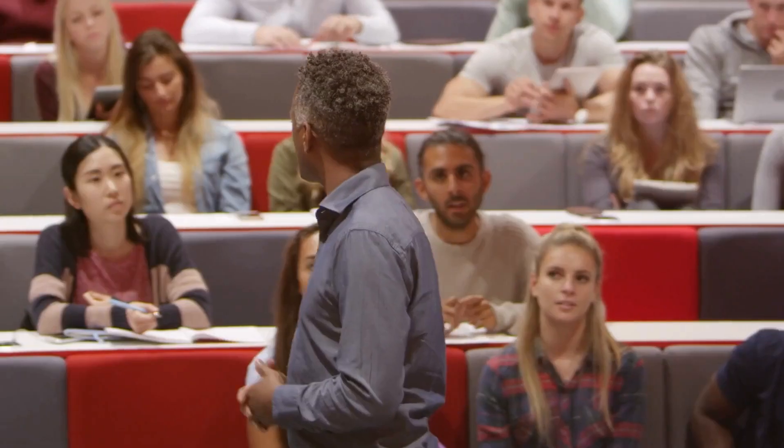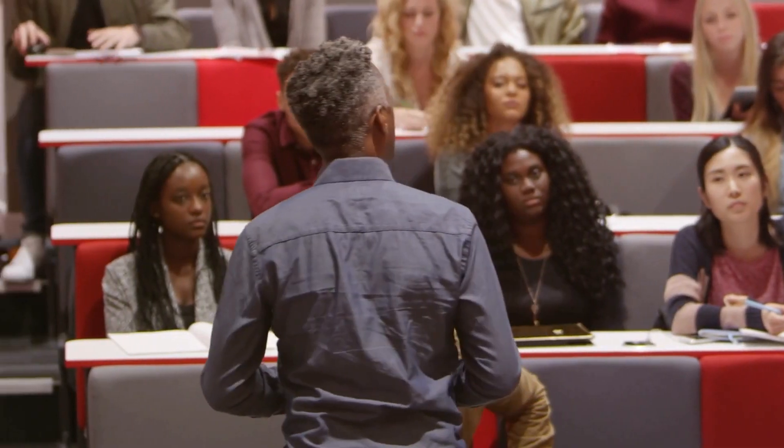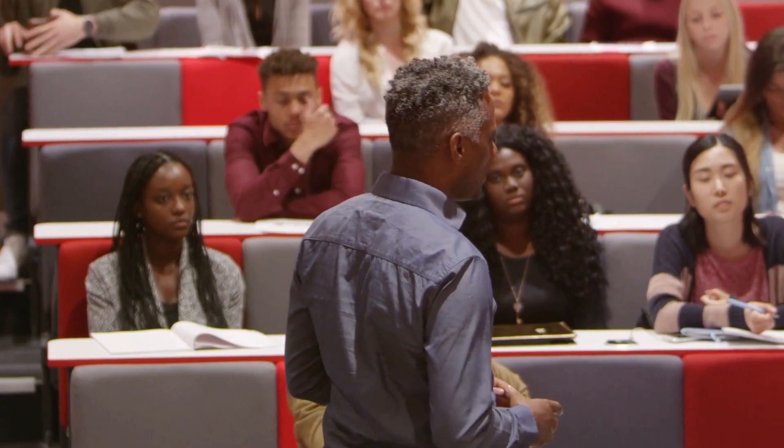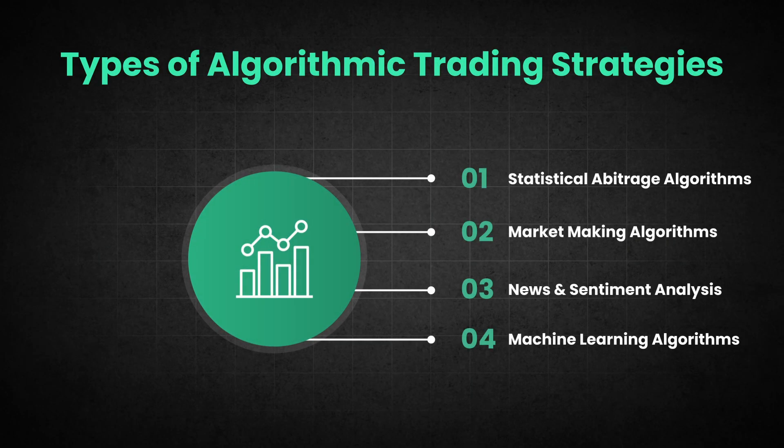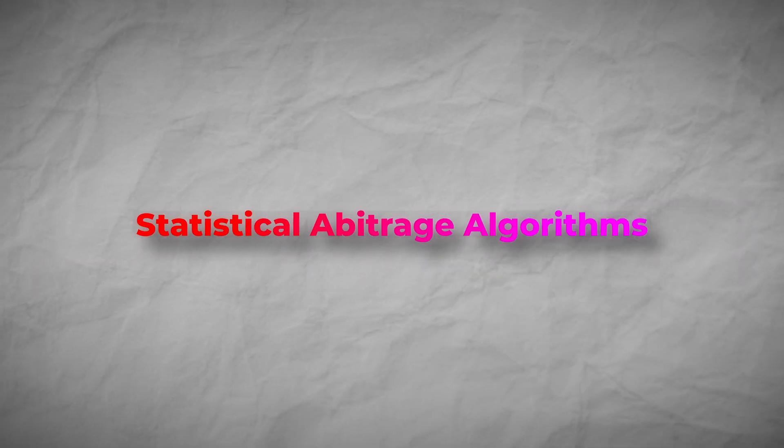But speed isn't everything. This is where we need to talk about the different species of trading algorithms, because this stuff is absolutely mind-bending. There are basically four main types of algorithmic trading strategies, and each one is more fascinating than the last.